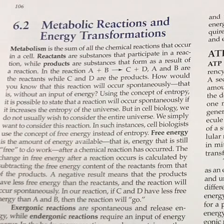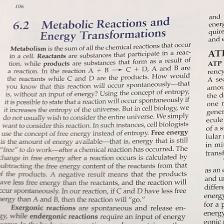Metabolism is the sum of all the chemical reactions that occur in a cell. Reactants are substances that participate in a reaction, while products are substances that form as a result of a reaction. In the reaction A plus B yields C plus D, A and B are the reactants while C and D are the products.